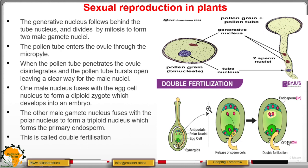The diploid zygote develops into an embryo, while the remaining male nucleus fuses with the polar nuclei to form a triploid nucleus that later develops into the endosperm. The endosperm is triploid in nature — it has three sets of chromosomes — and the zygote is diploid in nature, containing two sets of chromosomes. That is the basis of double fertilization.